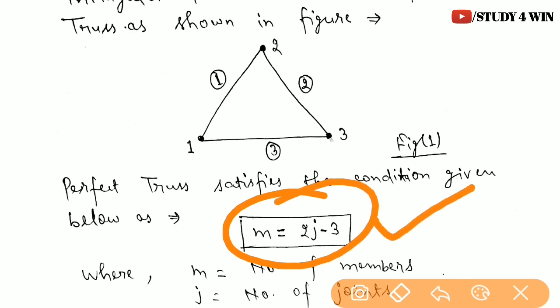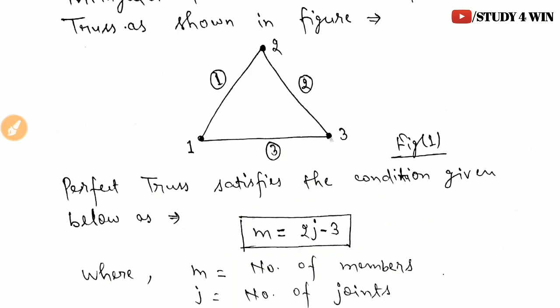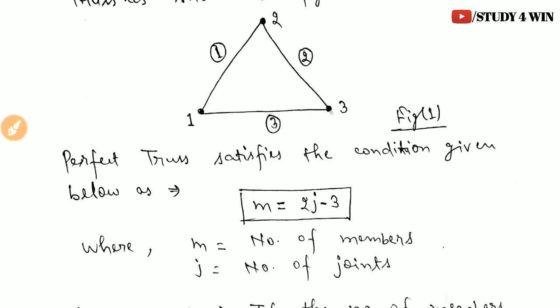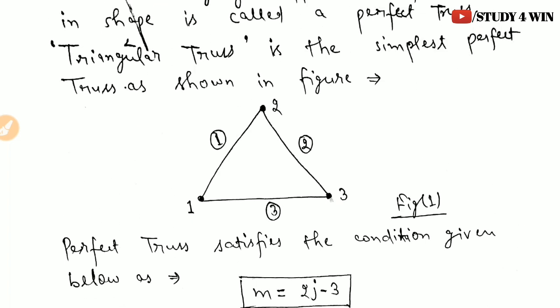For the triangular truss, j = 3 and m = 3. Putting the values into the equation m = 2j − 3: the right-hand side gives 2 × 3 − 3 = 6 − 3 = 3. The left-hand side value of m is also 3. Since left-hand side equals right-hand side, it satisfies the condition of a perfect truss. Hence, a triangular truss is the perfect example of a perfect truss.